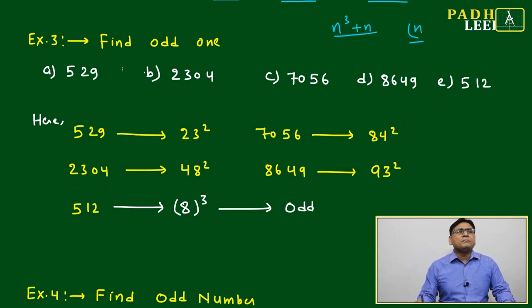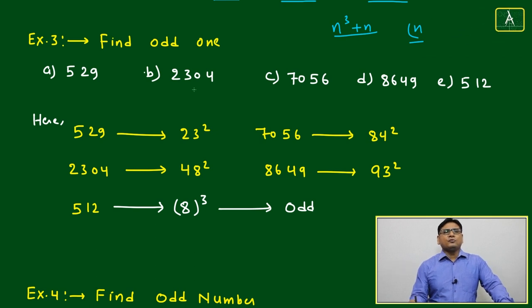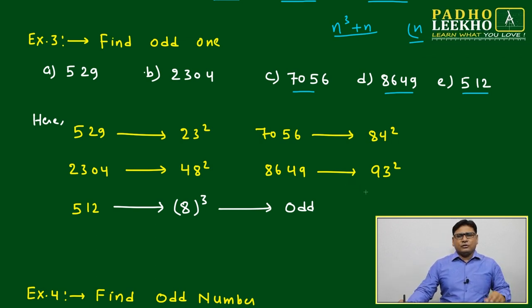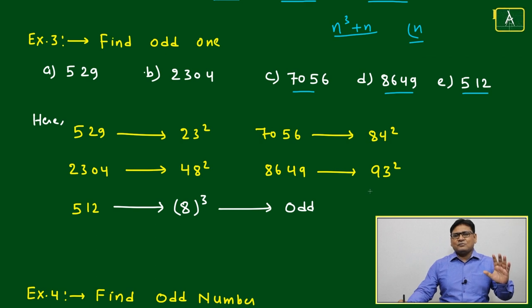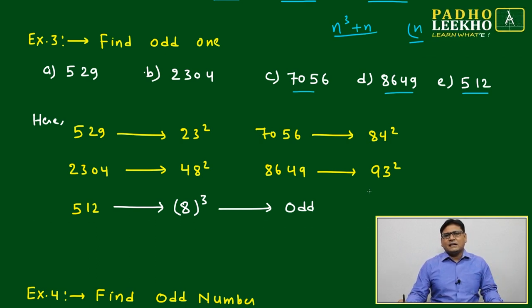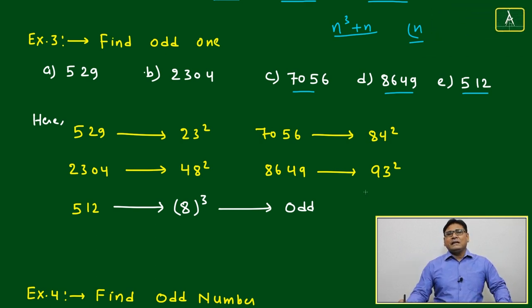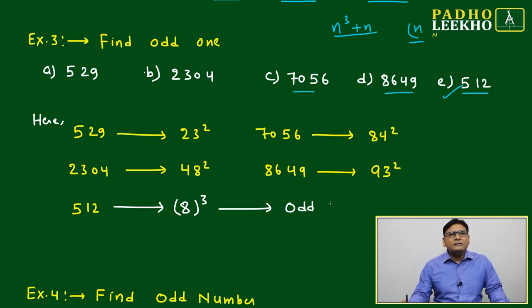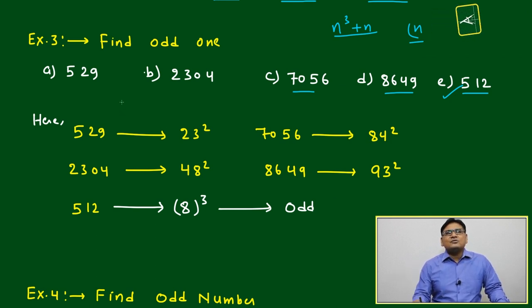Just we'll try to look at example number three. Five options are given: 529, 2304, 7056, 8649, 512. If you are good in number system, or you have gone through all the sessions of numbers, 32 sessions I have taken in numbers only in your quant, then just by seeing itself you will mark it. This one, this one, this is odd. Why? All are perfect square numbers.